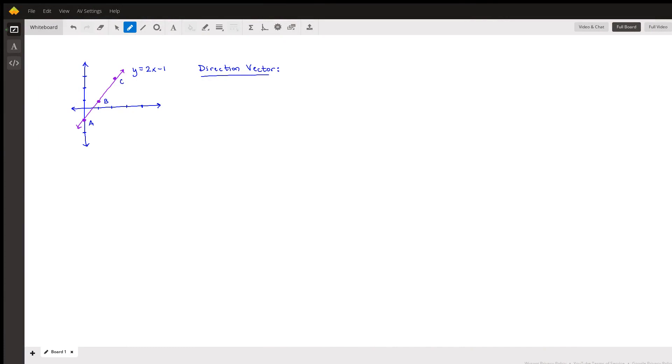Hello, so a student requested to explain how you would find the direction vector of a line, and the example that they gave me was y equals 2x minus 1. So as you can see there, I went ahead and graphed the function, labeled a few points, so I have a y-intercept of negative 1 with a slope of 2.